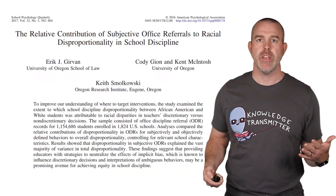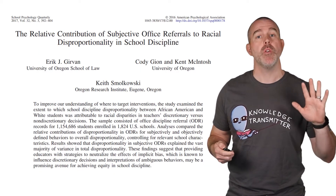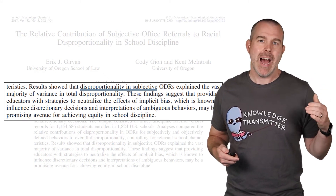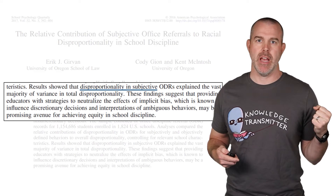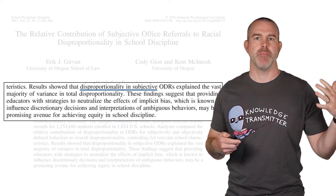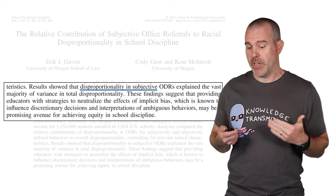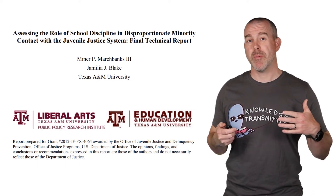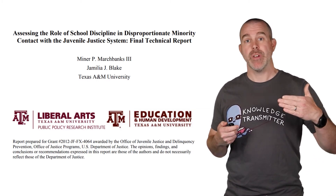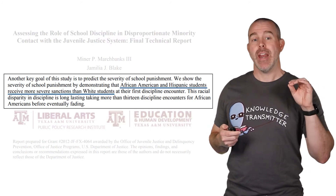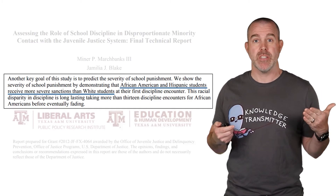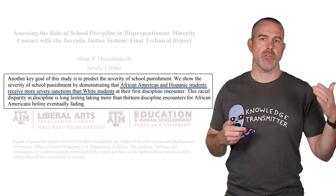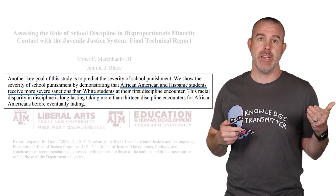If you're interested, I have some studies to share that show researchers have done experiments and research on this — it's a well-researched field of study. One study about disproportionate discipline found that it was the subjective types of discipline — not a documented incident where somebody clearly punched somebody, but something more subjective like being disrespectful — that's where the disproportionality came from. I'll put the link in the description. Another study looked at the relationship between school discipline and the juvenile justice system, and found that African American and Hispanic students had more severe sanctions for their first discipline encounter — not because of repeated offenses, but just after their first one.